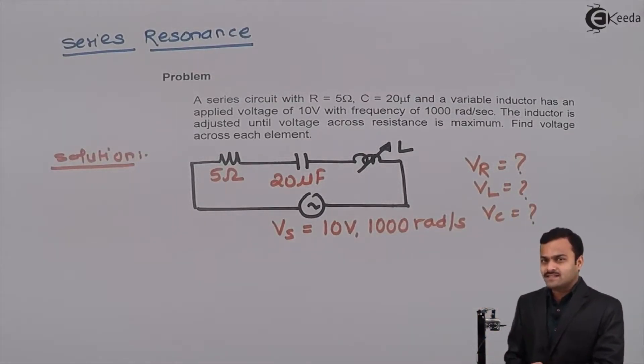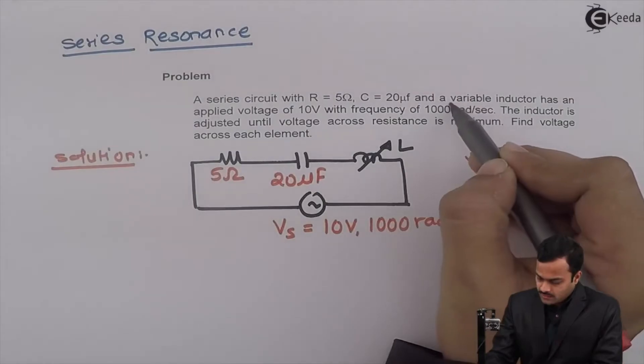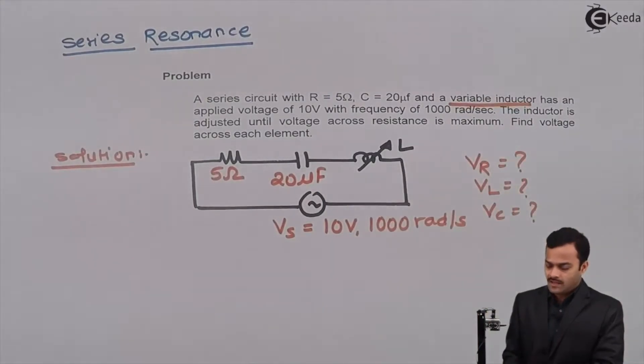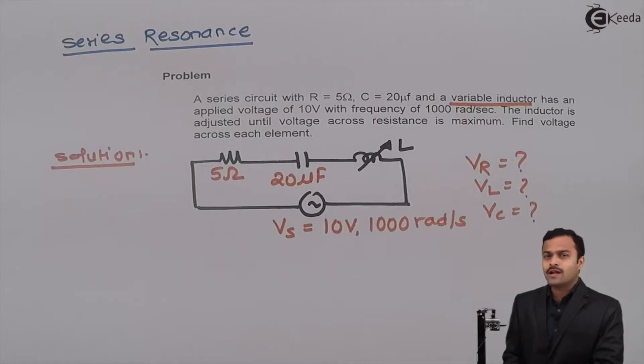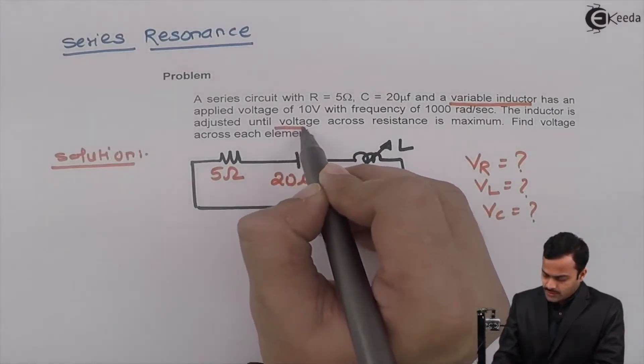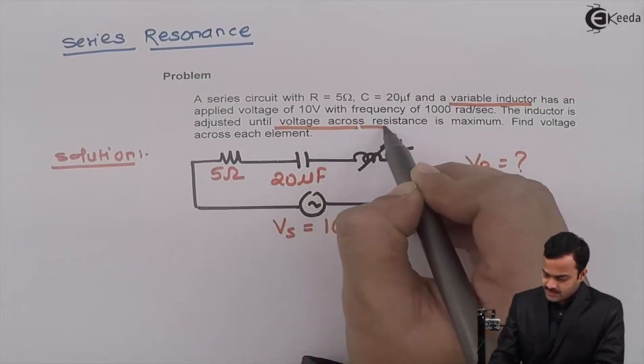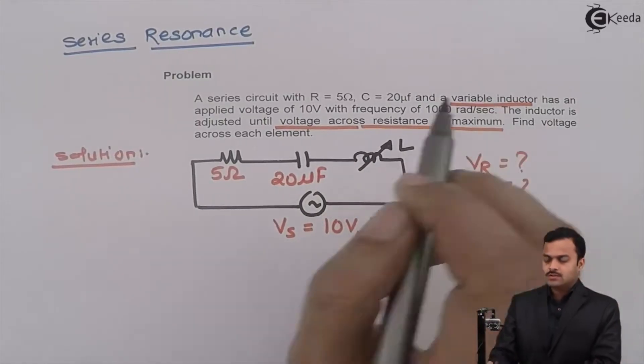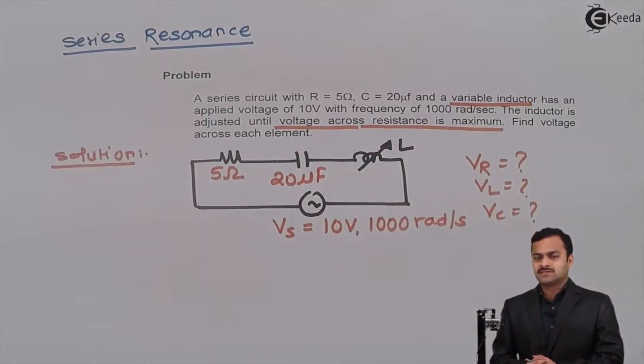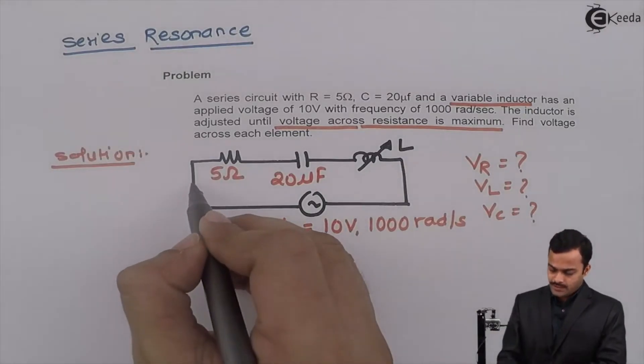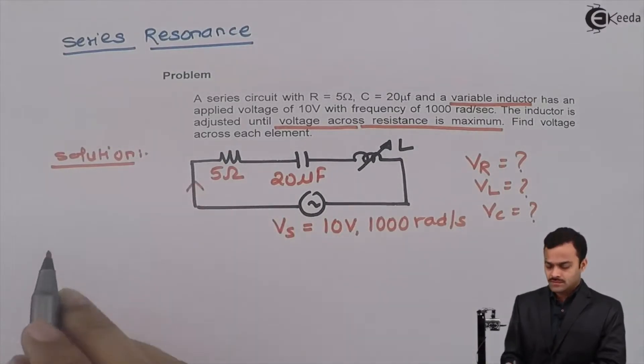What is the condition given which tells this is the problem of resonance? First of all, variable inductor is there. And secondly, we have to adjust inductors such a way that voltage across resistance is maximum. When we are getting voltage across resistance maximum, when current flowing through the resistance is maximum. When will this current be maximum?